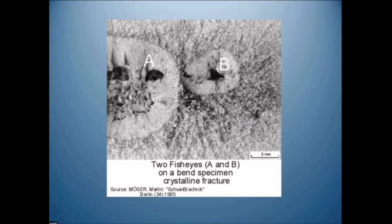In steels, fish eyes are fairly common on fracture surfaces. Professor Murakami, in his wonderful book on fatigue, is fascinated by fish eyes but has no explanation for them. My explanation is that a carbide inclusion forms on the bifilm and then prizes it open by growing into it, gaining the driving force for growth at low energy cost.